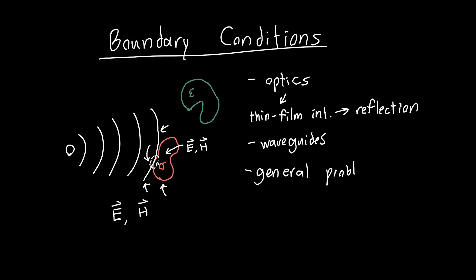And just how to solve electromagnetic problems in general. Because if we have some known object and some known field, or at least some known source — like a current density for example — then unless we know the boundary conditions, we can't figure out what the fields in our system are going to be. So they're really, really fundamental.